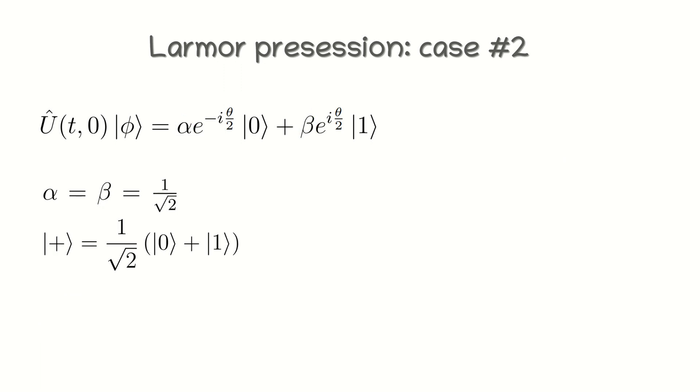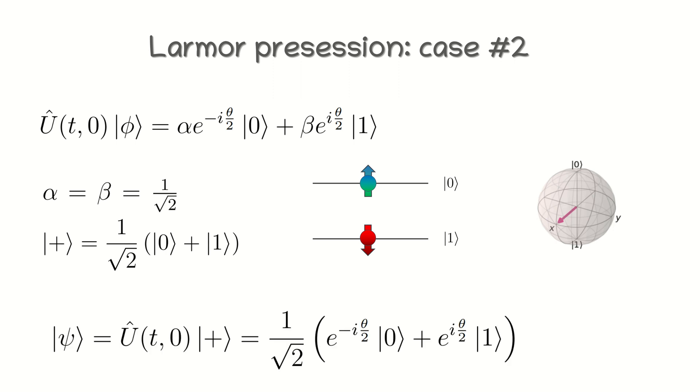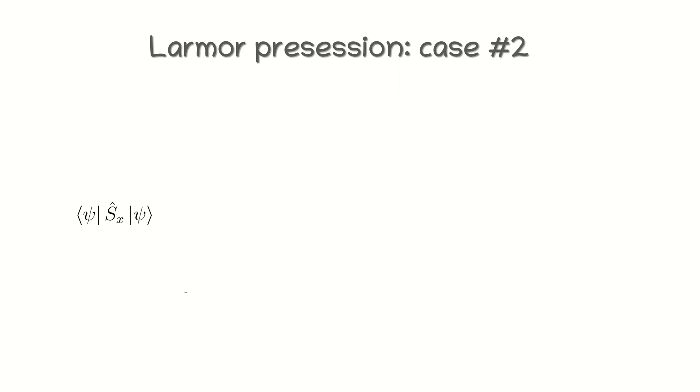Case number two. Now we start from a uniform superposition state, when the Bloch vector is aligned along the x-axis of the Bloch sphere. This state is also referred to as a plus state. We can easily find the state of the system after time t, which we denote as ket psi. And now we are going to calculate the expectation values of all three vectorial components of the spin to reconstruct its behavior in the space.